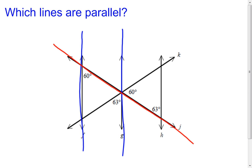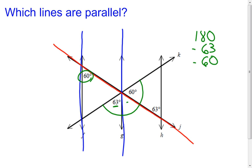Using line j as the transversal, I notice the 60-degree angle up at line f. Where line g and line j intersect, I have a 63-degree angle, but I don't know the third angle — though I can find it. These three angles together must add up to 180 degrees, so I subtract 63 and 60 from 180, giving me a 57-degree angle. The 60-degree angle and the 57-degree angle are corresponding angles and are not congruent, so line f and line g are not parallel.